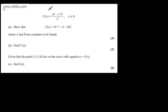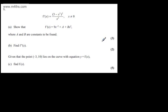In question 9, we're given f'(x) equal to the quantity (3 minus x squared), all squared, over x squared, where x cannot be equal to 0. In part a, we need to show that f'(x) is equal to 9x to the minus 2, plus a, plus bx squared, where a and b are constants to be found. The question carries three marks.